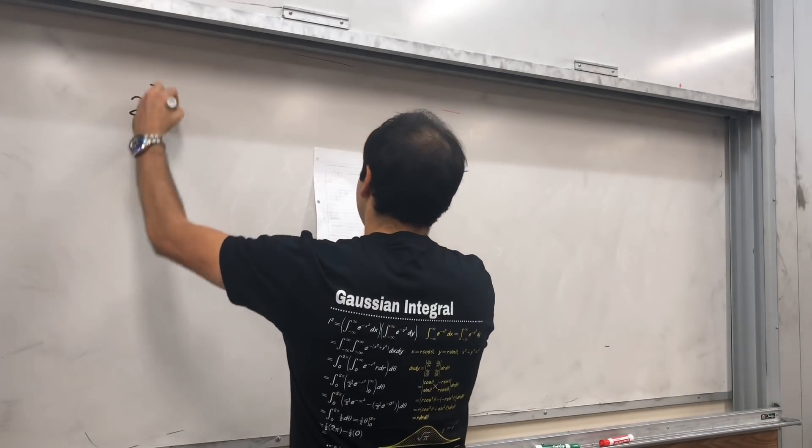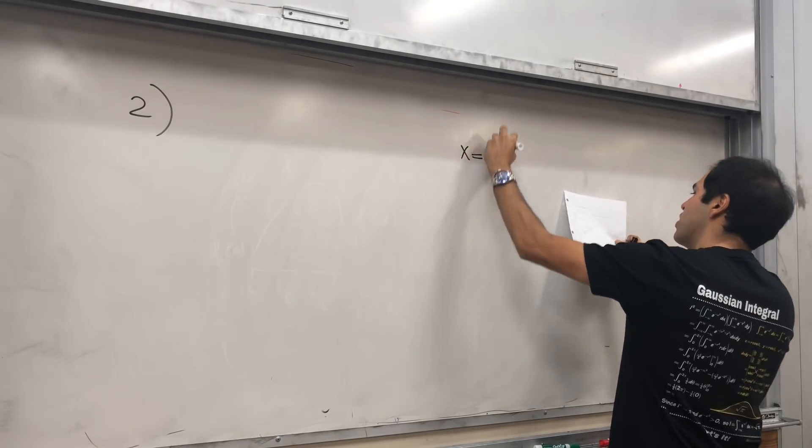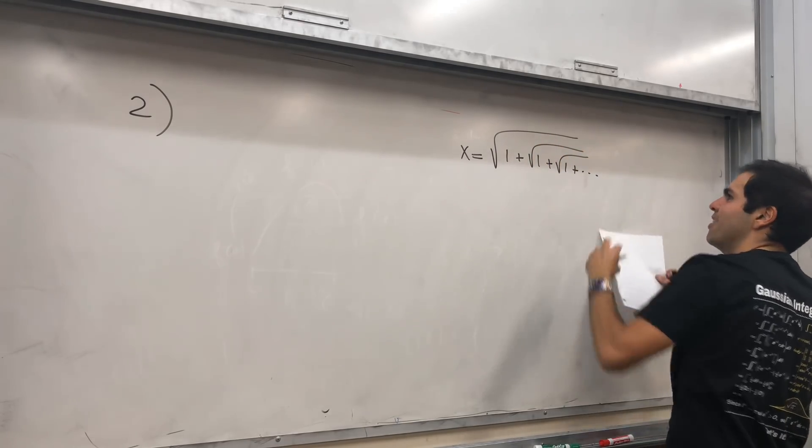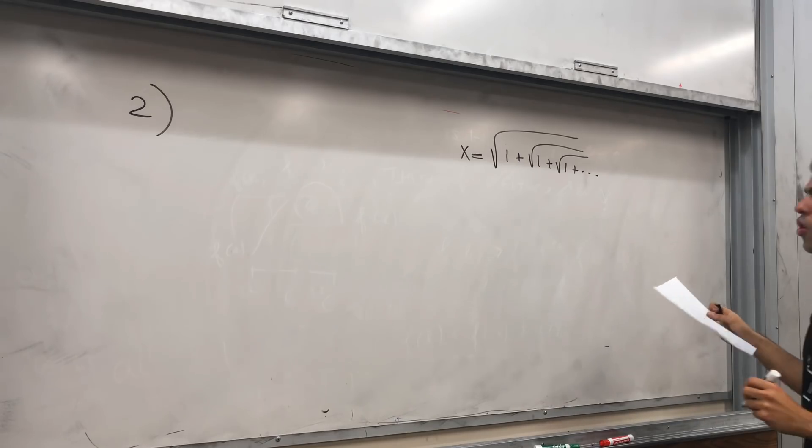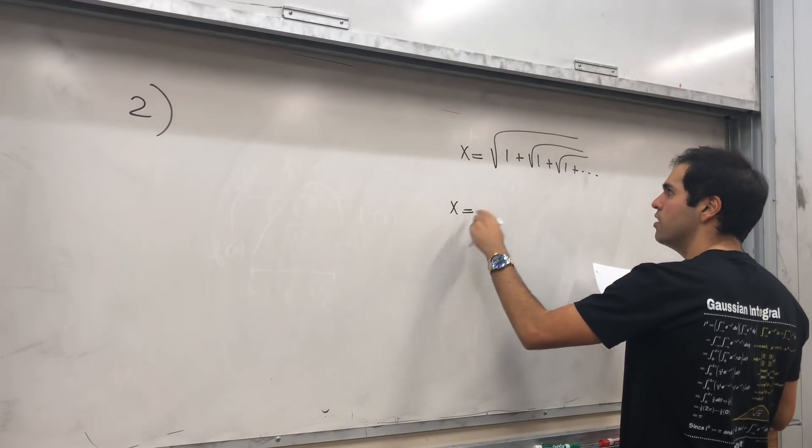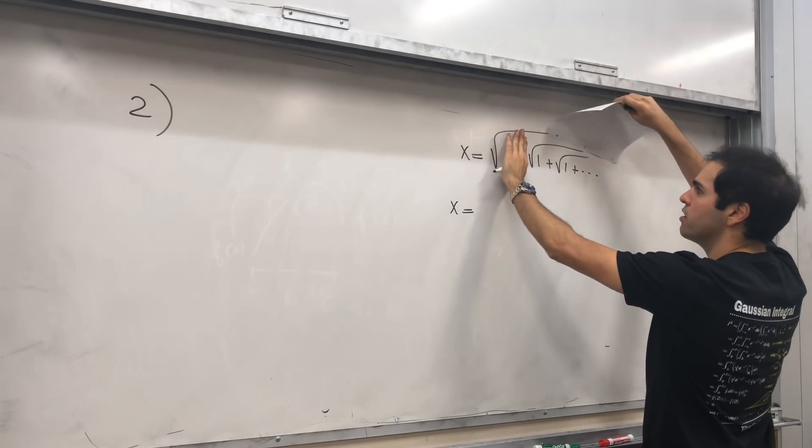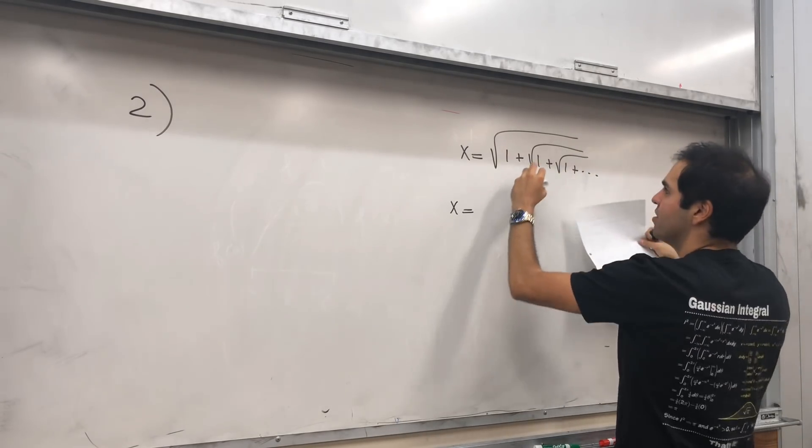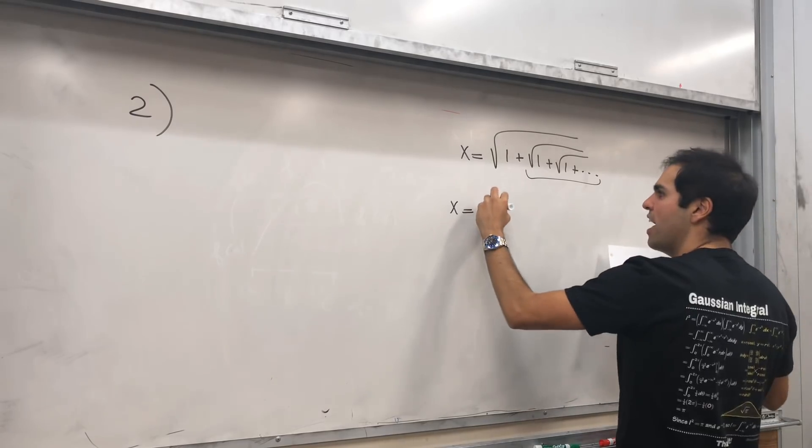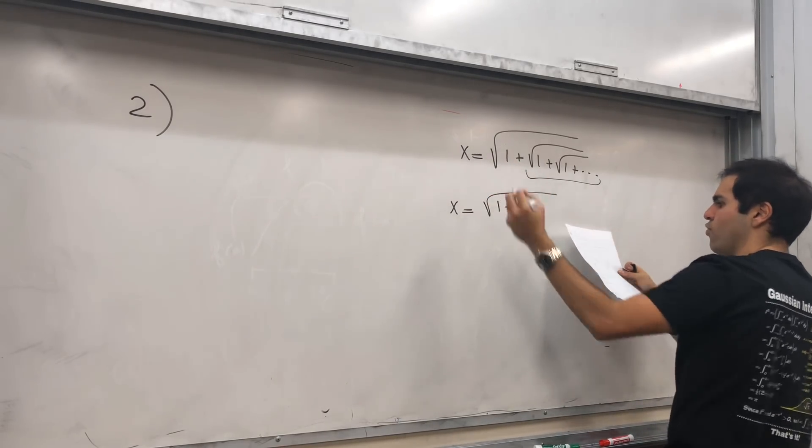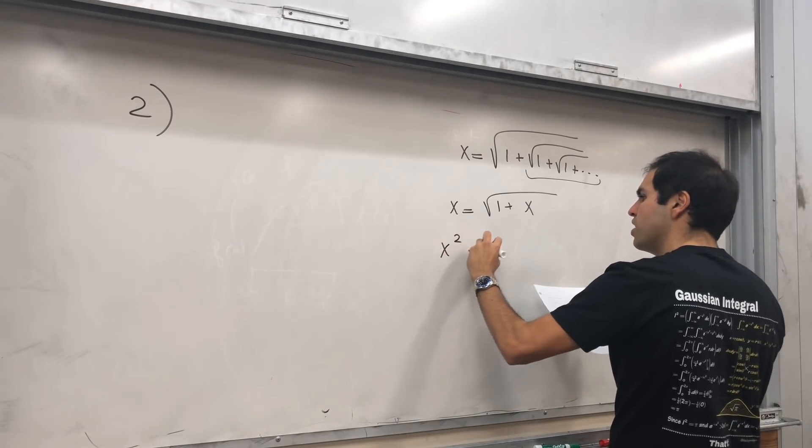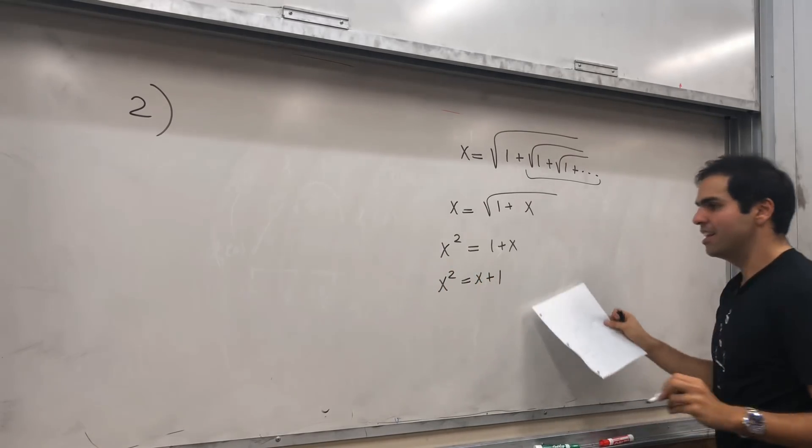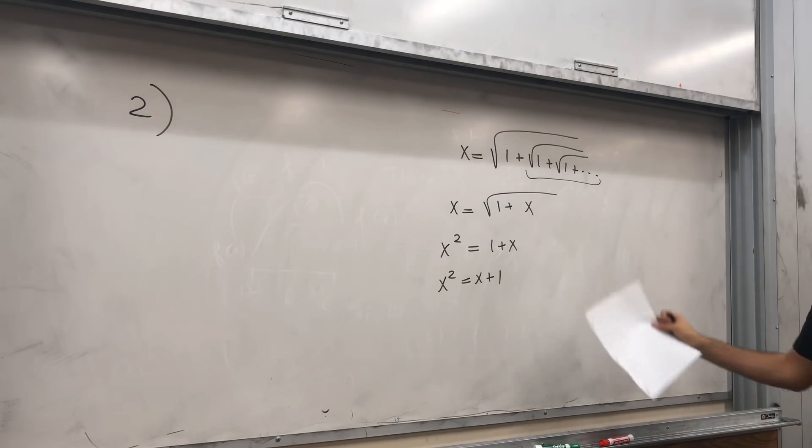Now, next thing. Remember this number: x equals square root of 1 plus square root of 1 plus square root of 1 plus blah blah blah. This is another way of defining the golden ratio because you notice it's very recursive. Because this number, if you ignore it, 1 plus square root of 1 plus blah blah blah, that's still x. So this whole thing, if you want, that's still x. So x has to satisfy x equals square root of 1 plus x. And you can solve this. You get x squared equals 1 plus x. So x squared equals x plus 1, which ultimately gives you the golden ratio.